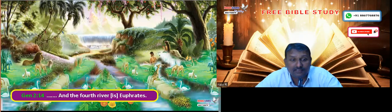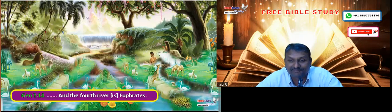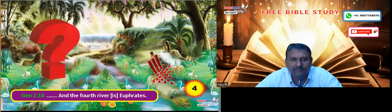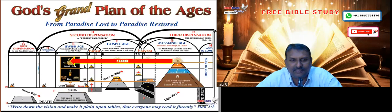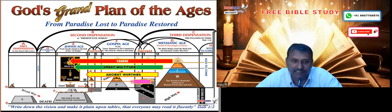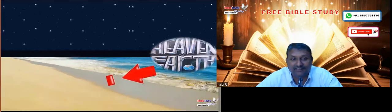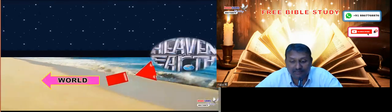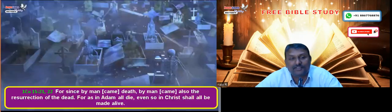Now, the last river is called Euphrates. This is the fourth river. Which is the last class left over? We have studied the 144,000, the great multitude, and the ancient worthies. The balance is the world. This fourth river represents the worldly salvation. Therefore, Euphrates in the Bible means the general world. They also come to the earthly salvation.